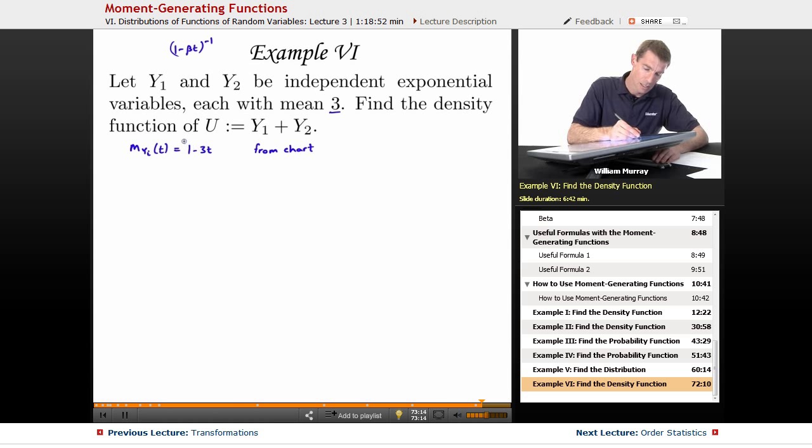So it's 1 minus 3t to the negative 1, and so we're going to use that when we find the moment generating function for u. That's the moment generating function for y1 plus y2, and the whole point of moment generating functions, or one of the very useful properties that they have, is that it converts addition into multiplication. So m sub y2 of t, or m sub y1 times m sub y2, that's 1 minus 3t to the negative 1 times 1 minus 3t to the negative 1, and so we just get 1 minus 3t to the negative 2.